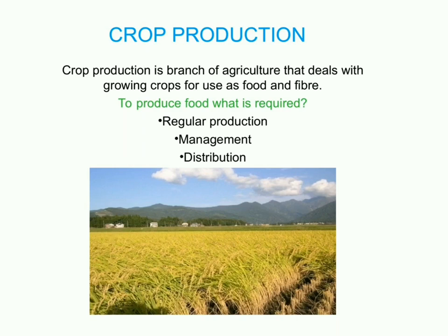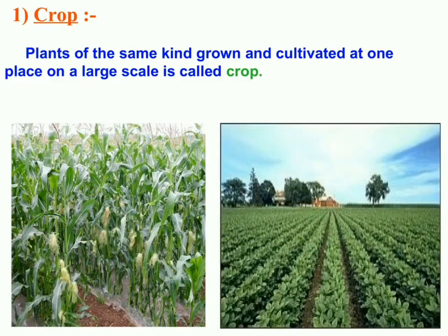Crop production is a branch of agriculture that deals with growing crops for use as food and fiber. Till 10,000 BC, people were nomadic — they wandered in groups from place to place in search of food and shelter. Later, they could cultivate land and produce rice, wheat, and other food crops. This was how agriculture was born. Agriculture is the branch of biology which involves the practice of cultivating crops as well as rearing animals.